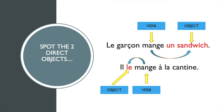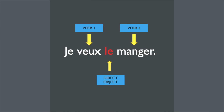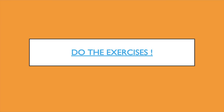This diagram shows you clearly how and why the direct objects are placed where they are. We are going to do exercises on this so you can understand clearly how this all works. When there are two verbs, the noun remains after them, but the pronoun is placed between them. For example, 'Je veux le manger' — I want to eat it. 'Le' is placed between the two verbs. In English, it comes after both verbs: I want to eat it. Hopefully that's clear and you will do the exercises to understand better and apply what you've just learnt.